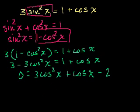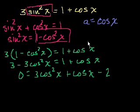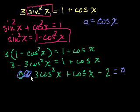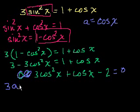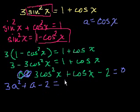Let me make a substitution, and then I think it'll all become clear. Let's say d is equal to cosine of x. So if we replace the cosine x's with d, we get 3d squared plus d minus 2 is equal to 0.